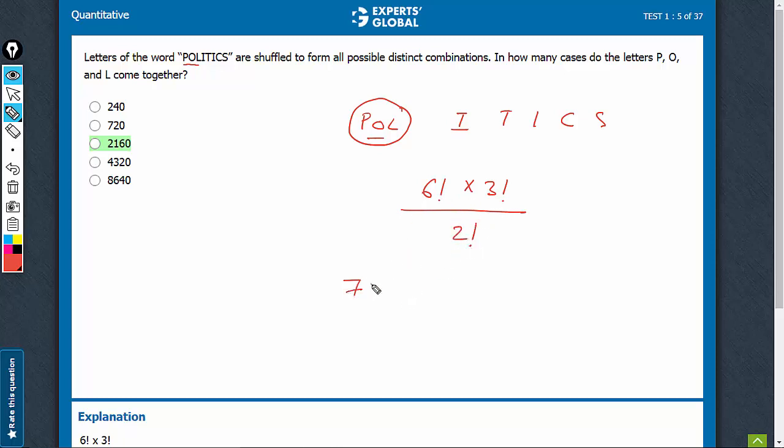So, 6 factorial is 720, 3 factorial is 6 upon 2, that's 720 into 3, 2160. That's the right answer.